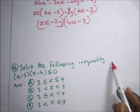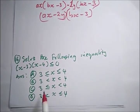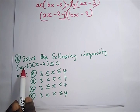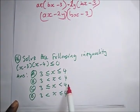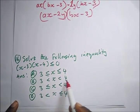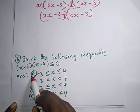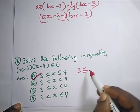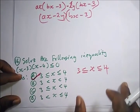The next question says: solve the following inequality. Moving terms to the other side, the minus changes to positive. The answer is 3 ≤ x ≤ 4, which is option A.